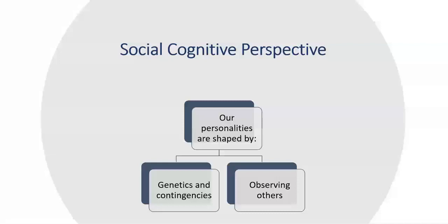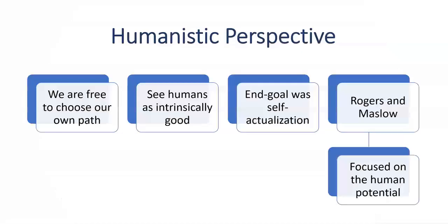According to social cognitive theory, we interpret the environment and what happens to us in ways that shape us. So if we are naturally outgoing or extroverted — which would be our genetics — we are more likely to go out and make friends. These experiences are in turn rewarding, which reinforces our behavior, so we are more likely to go out and meet new people. Moreover, our personalities might also be shaped by observing other people. Bandura was a big proponent that children learn by copying the behaviors of others, and some habits do come from observing the behavior of others.